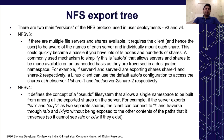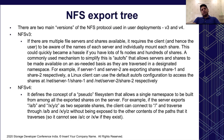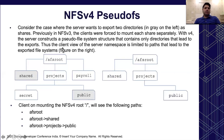NFS v4 defines the concept of a pseudo file system that allows a single namespace to be built from all the exported shares on the server. The advantage is that you don't need to remember the names of individual shares. For example, if the server exports /a/B and /X/Y/Z as two separate shares, the client can connect to slash (the root of the exported tree) and traverse through those paths without being exposed to other contents.